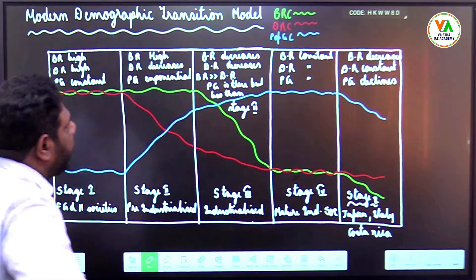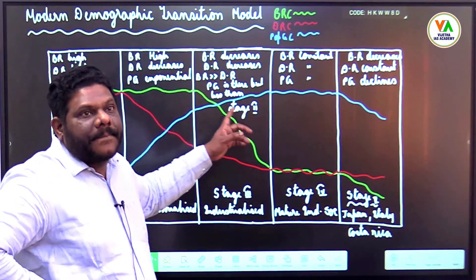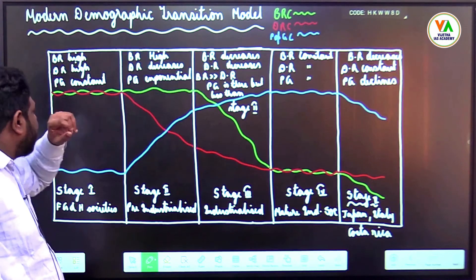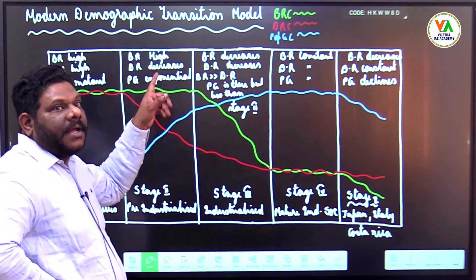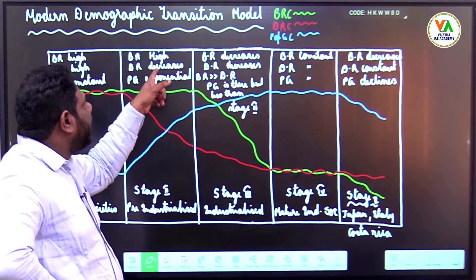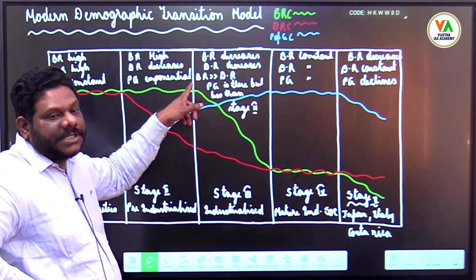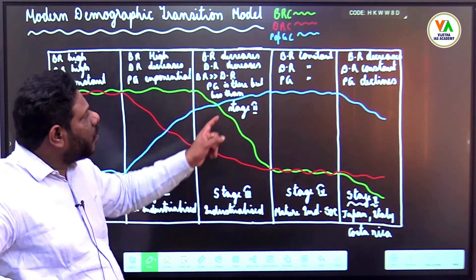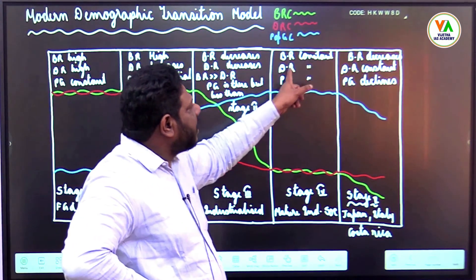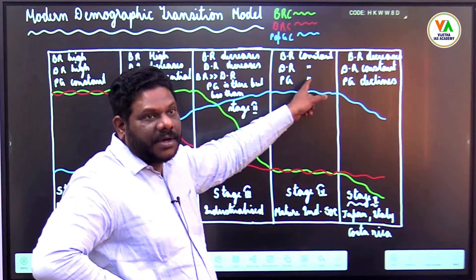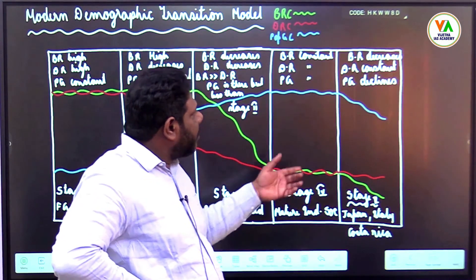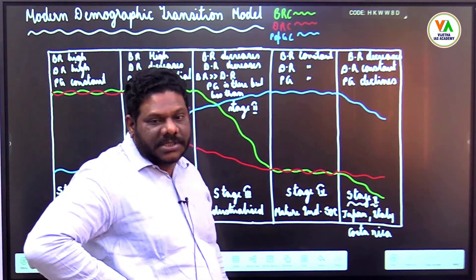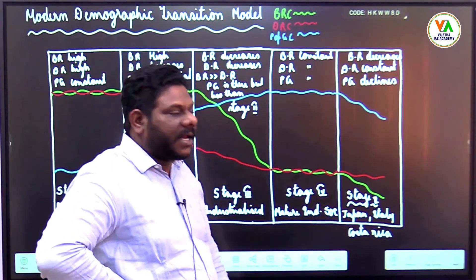Online students, you should be able to see these: Birth rate high, death rate high, population growth constant. Birth rate high, death rate decreases, population growth exponential but less than Stage 2. Birth rate constant, death rate constant, population growth constant. Birth rate decreases, death rate constant, population growth declines.